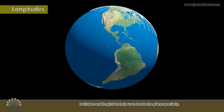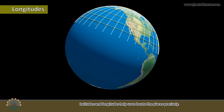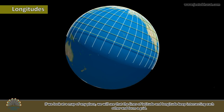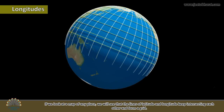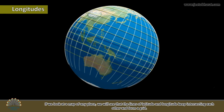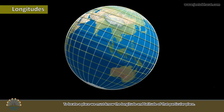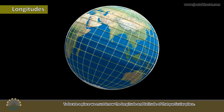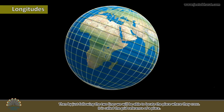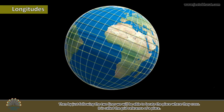Latitudes and longitudes help us to locate places precisely. If we look at a map of any place, we will see that the lines of latitude and longitude keep intersecting each other and form a grid. To locate a place, we must know the longitude and latitude of that particular place. Then, by just following the two lines, we will be able to locate the place where they cross.